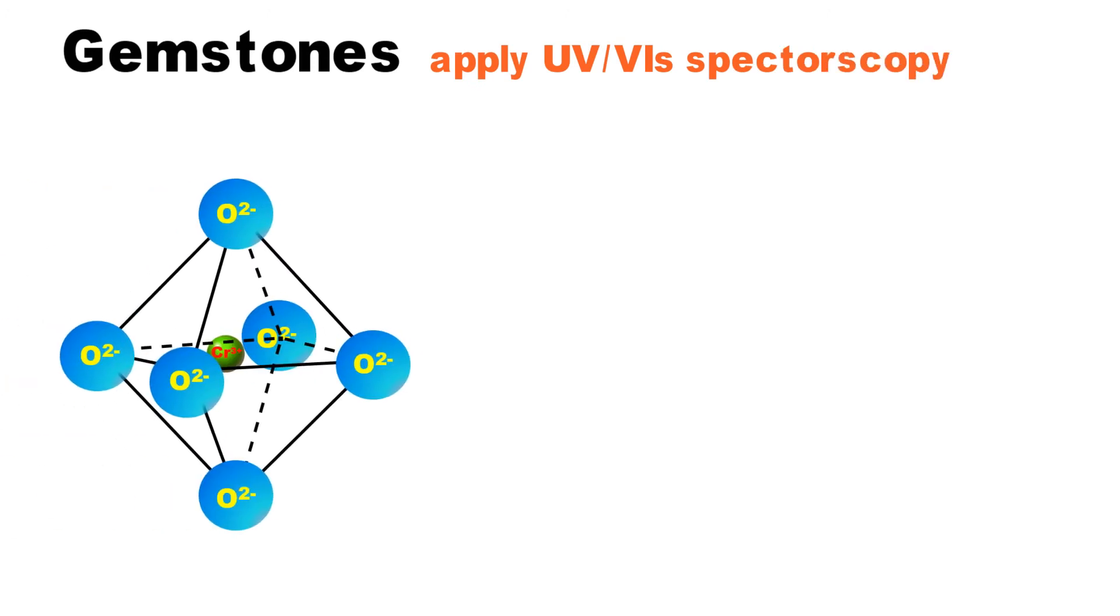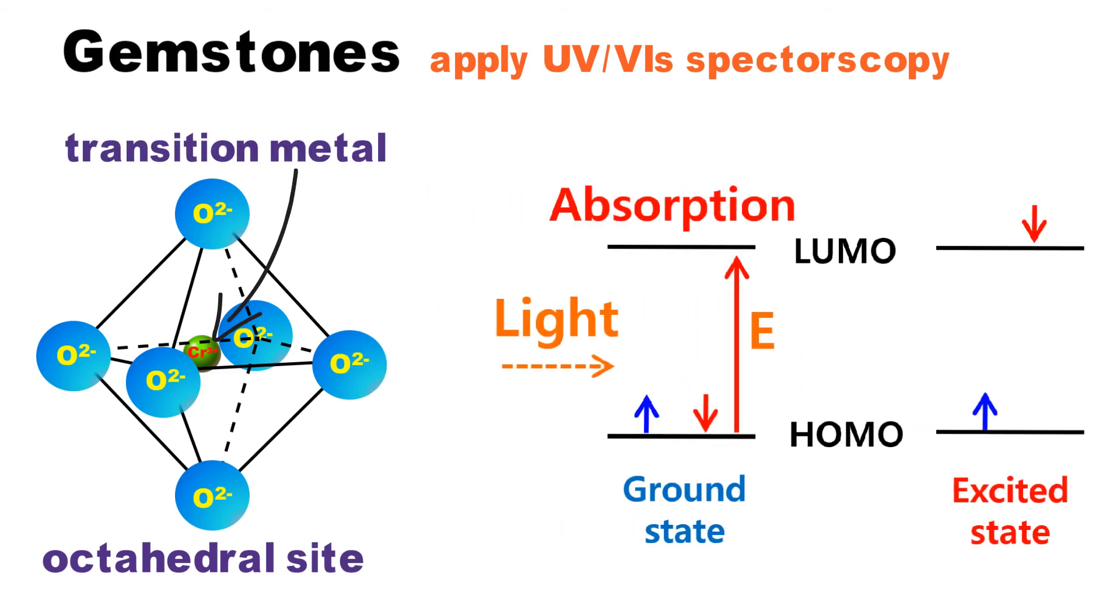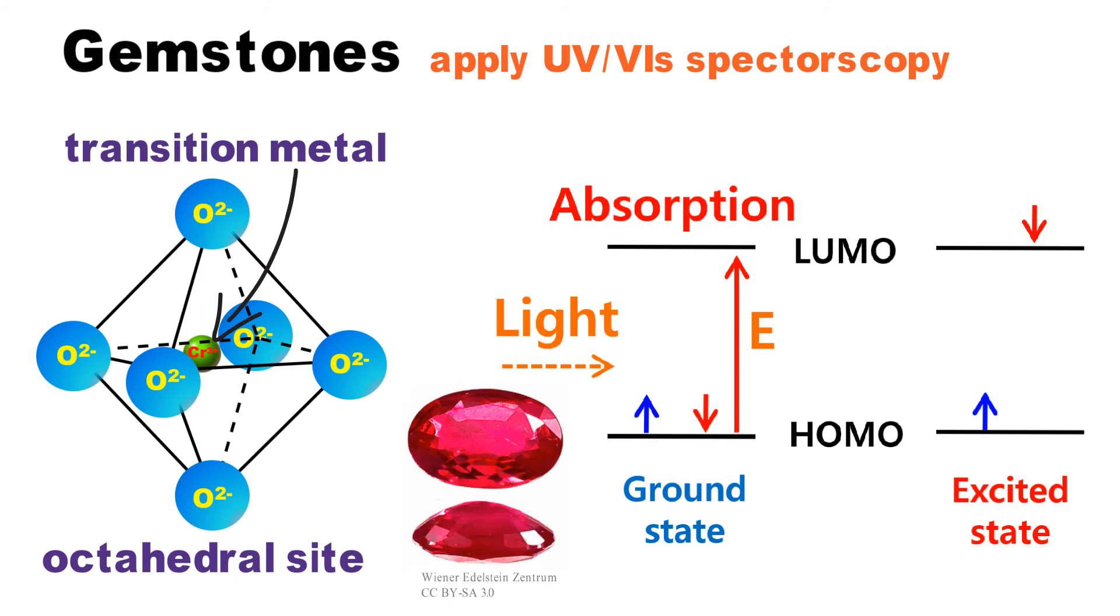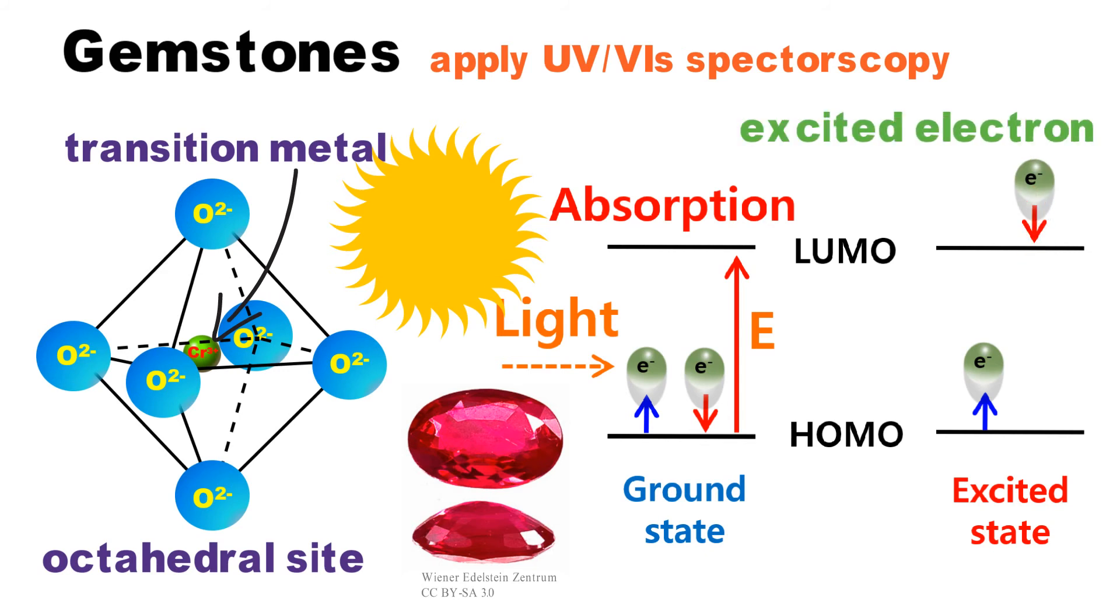Now, let's apply UV visible spectroscopy to gemstones. Generally, gemstones have transition metals in the crystal lattice, especially in the octahedral sites. If light illuminates the gemstones, electrons of the transition metals will be excited as they absorb the light. This energy is different depending on gemstones, respectively.